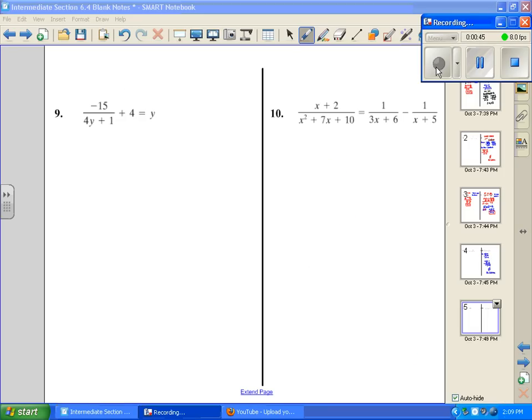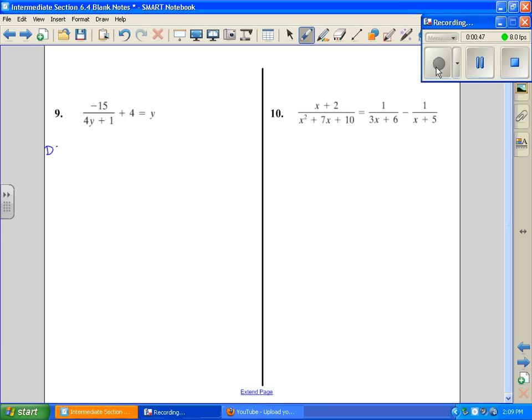So we look at number 9. First, we're going to work with our domain, which says 4y plus 1 cannot equal 0. Divide both sides by 4, and y cannot equal negative 1 fourth. Next we're going to have a common denominator, which is going to be 4y plus 1.